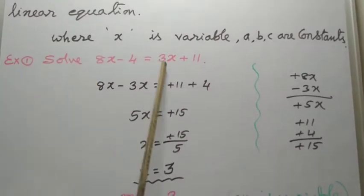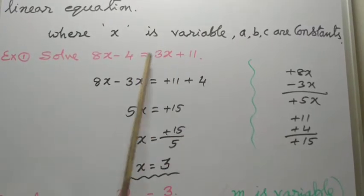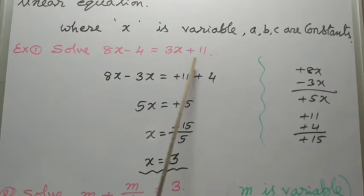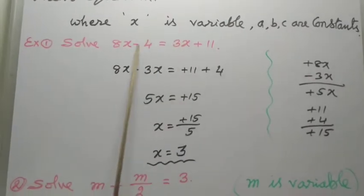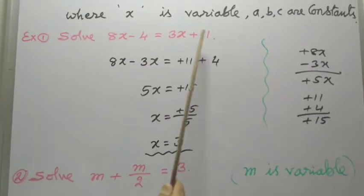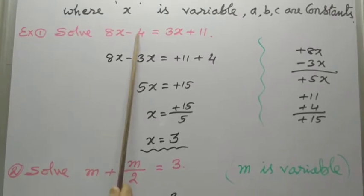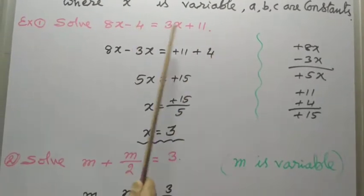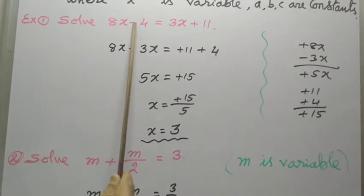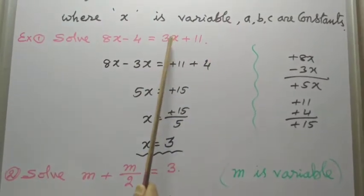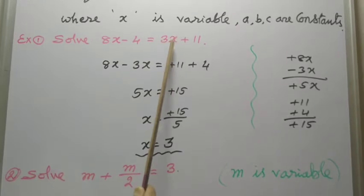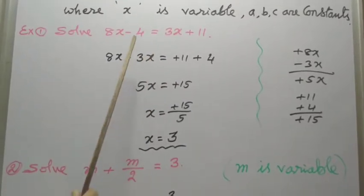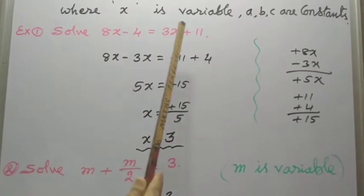This is variable, this complete is variable, and these two are numerical values. So, transfer unknowns to one side and knowns to one side. This minus 4 is a known quantity, 11 is a known quantity. So let us group them. So take minus 4 to right-hand side and take this plus 3X to left-hand side.